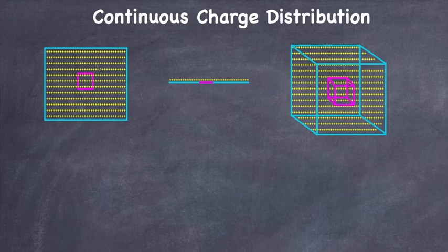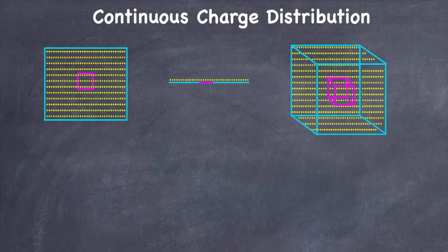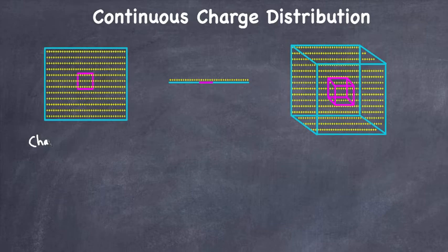Continuous charge distribution can be on a line, on a surface, or throughout the entire volume of a shape like a cube. To calculate the force due to a continuous charge distribution on a test charge — whether the test charge is near the line, the surface, or the volume — the concept of charge density is used.